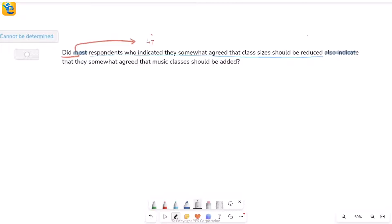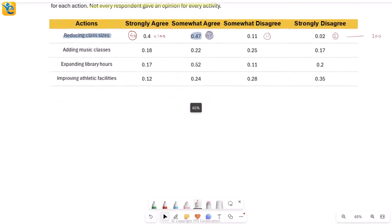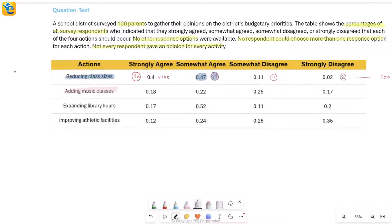So it says, did most of these 47 people also indicate that they somewhat agreed that music classes should be added? This is another category. Music classes was also a category here. I found somewhat agree for reducing classes, 47. Now I'm talking about somewhat agree people for music classes. And these are 0.22, so 22 people.